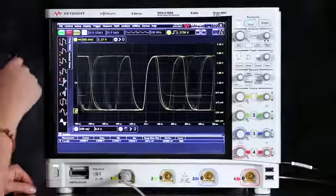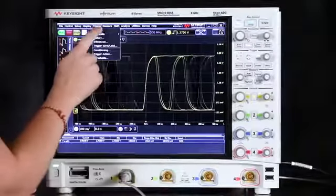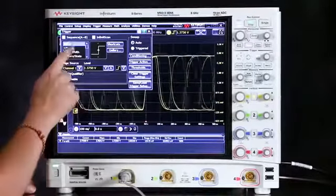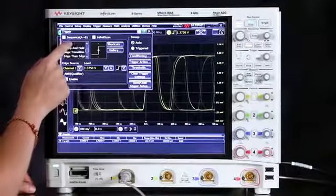Autoscale uses a basic edge trigger to stabilize your waveform on screen. But we can choose other events to trigger on as well. Let's go to the trigger menu and select setup. You can see there are a bunch of different anomalies that we could choose to trigger on in the waveform.